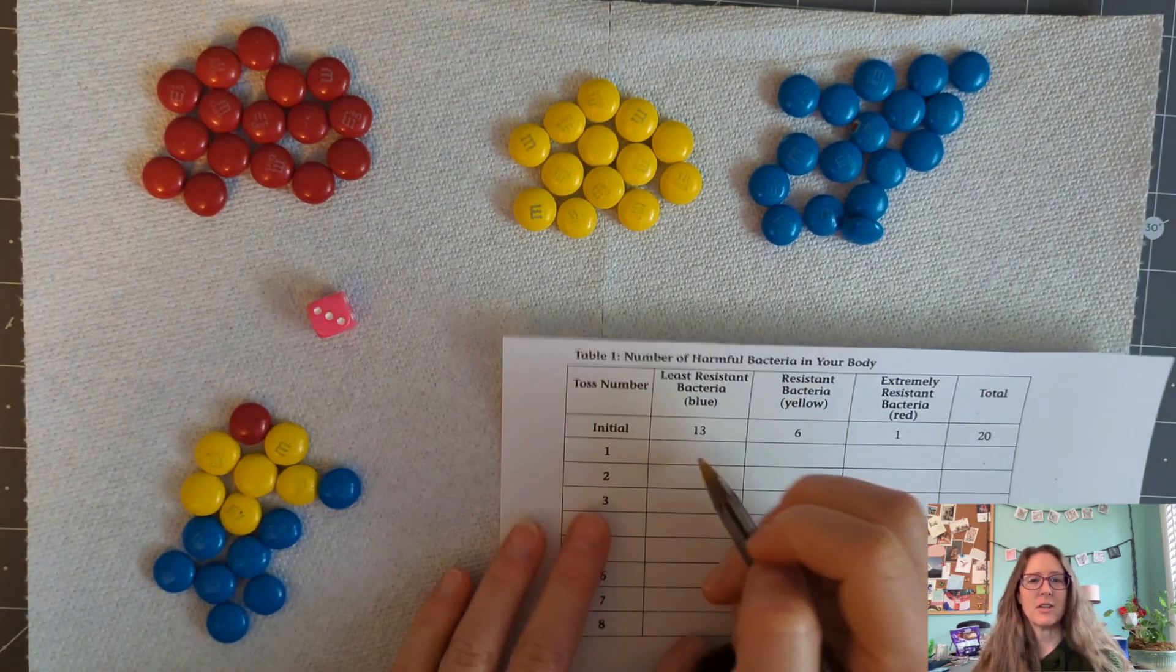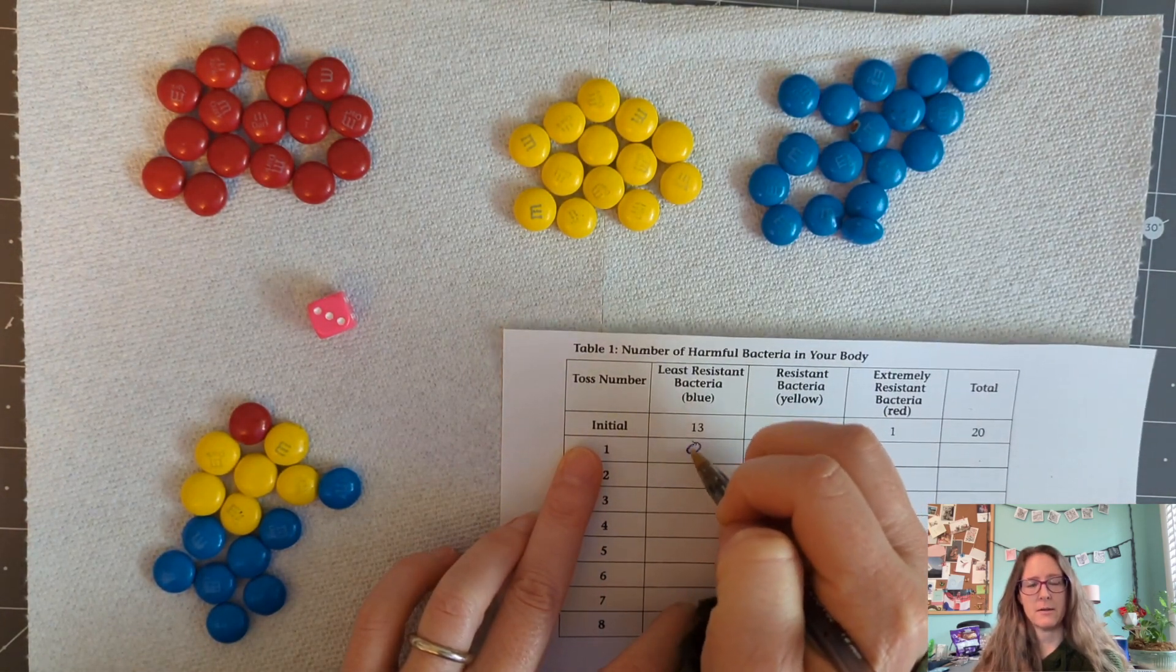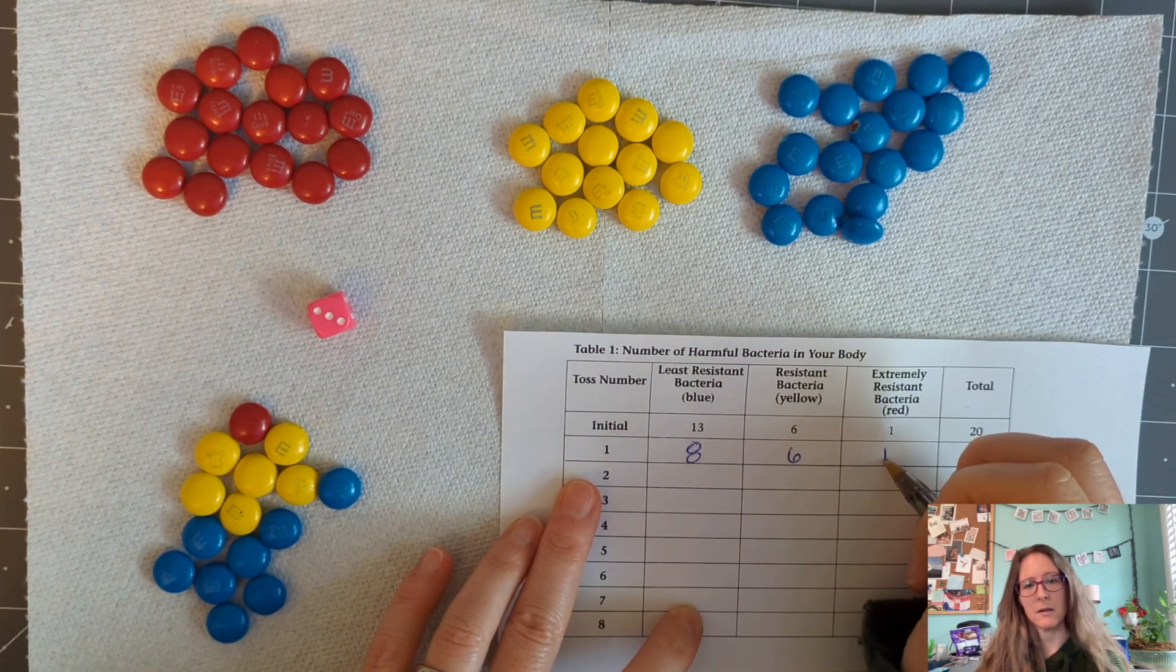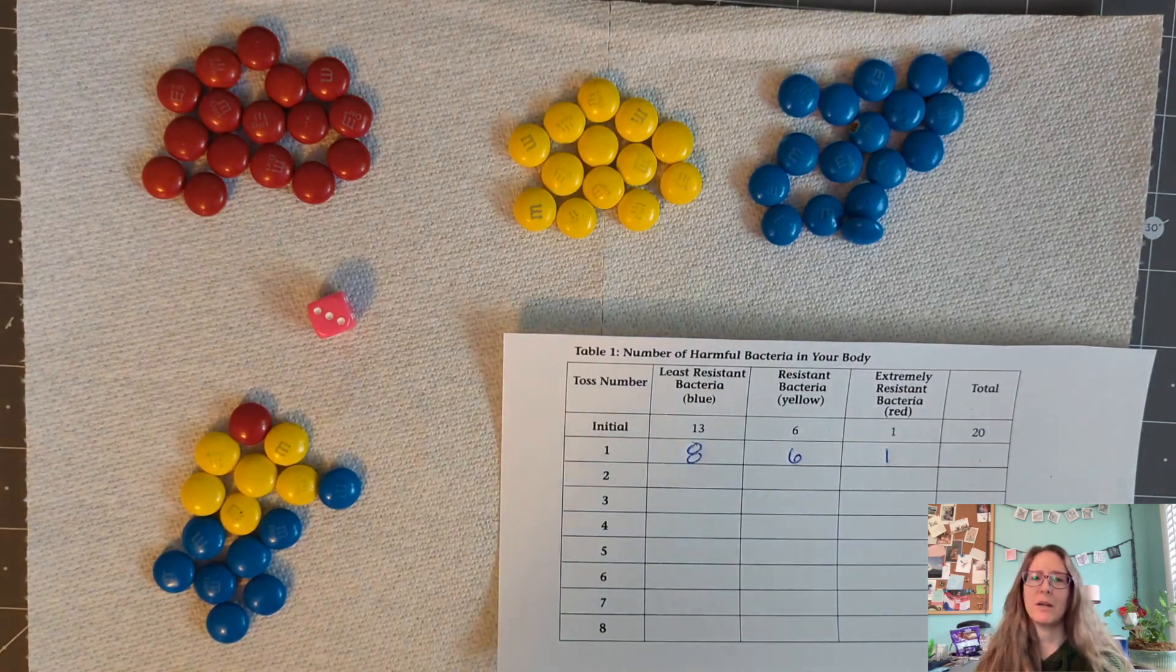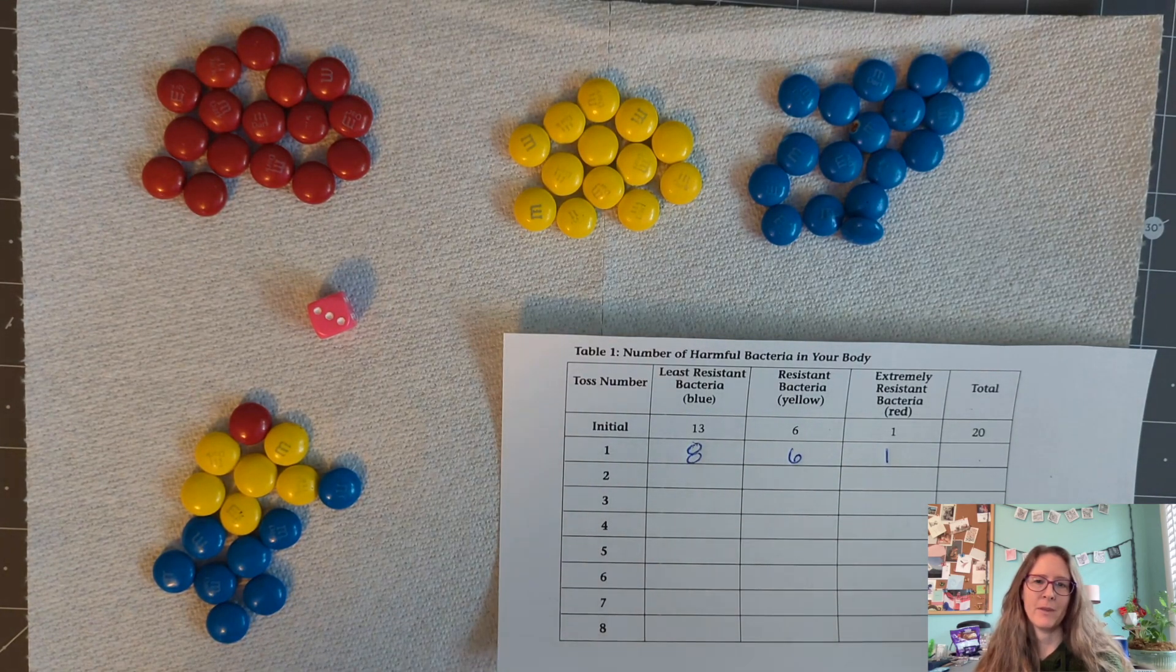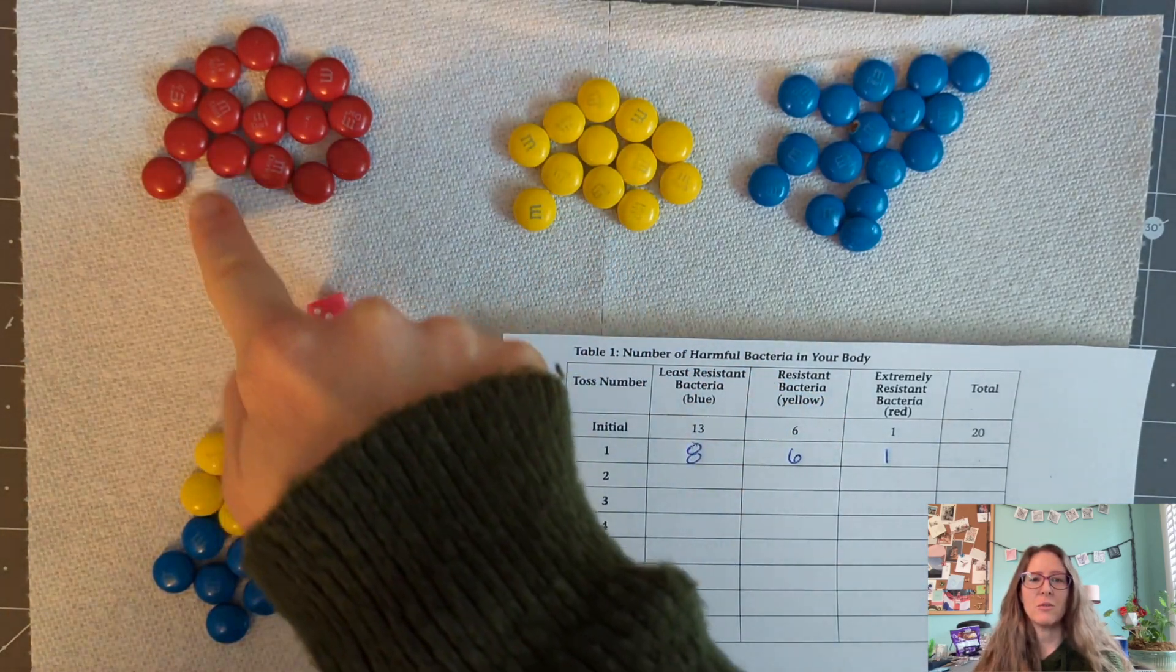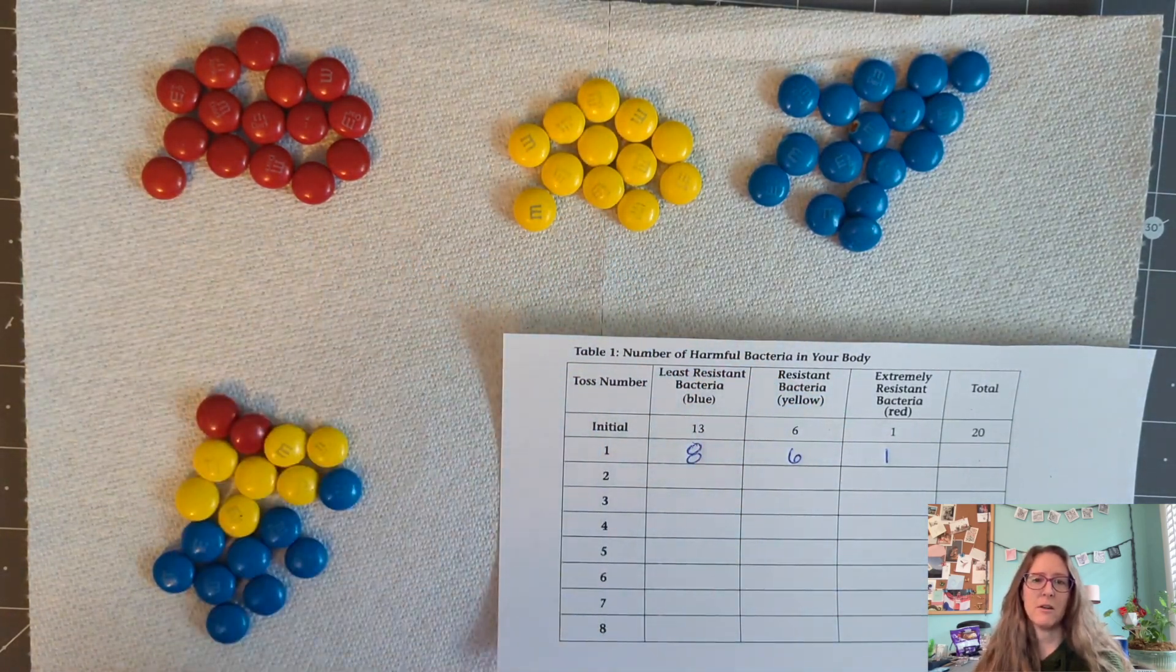Students will roll the die each time they're supposed to take their antibiotics. If students roll one, three, five, or six, they have successfully taken their medicine and killed the bacteria. They remove five tokens. The important thing to remind students is that they should remove the least resistant bacteria first.